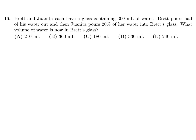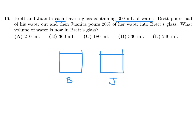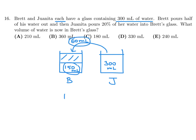Brett and Juanita each have a glass containing 300 ml of water. Brett pours half of his water out, leaving him with 150 ml. Then Juanita pours 20% of her water — which is 60 ml — into Brett's glass. So Brett now has his 150 plus that new 60, and 150 plus 60 is 210. That is the answer.